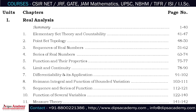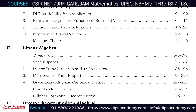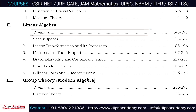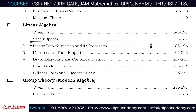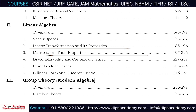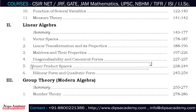The second chapter is Linear Algebra. It begins with a brief summary, followed by questions and solutions on vector spaces, linear transformations and their properties, matrices and their properties, diagonalizability and canonical forms, inner product spaces, and bilinear and quadratic forms.